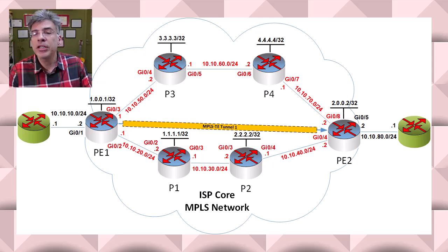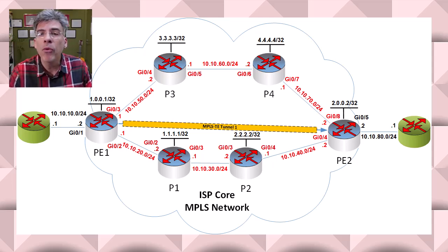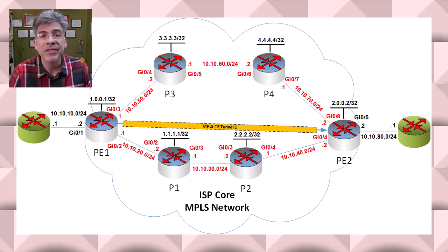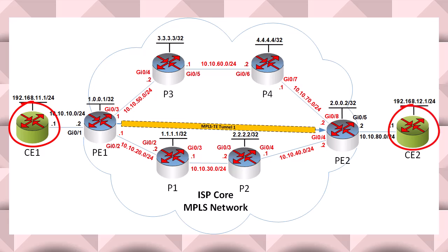So we go back to our topology and we have all of the various components already configured as stated, but there's one more thing we have to do that we haven't done so far in the previous videos, and that's to include the configuration of the customer edge routers. There are a variety of ways we can interconnect our CEs to the MPLS network, but for now we'll just use a simple OSPF adjacency with their corresponding PE routers.